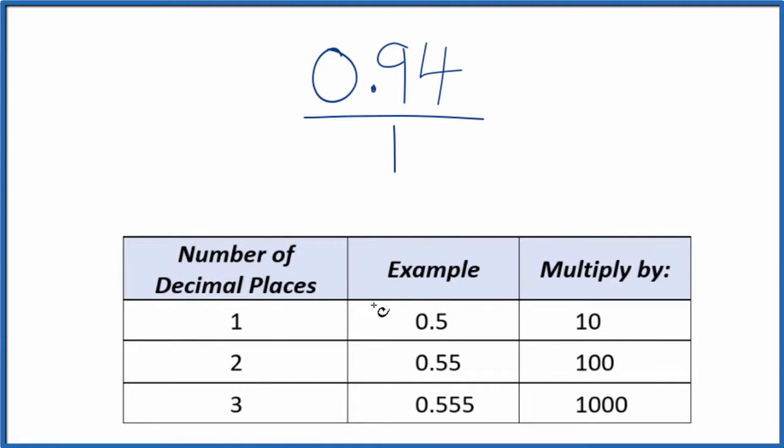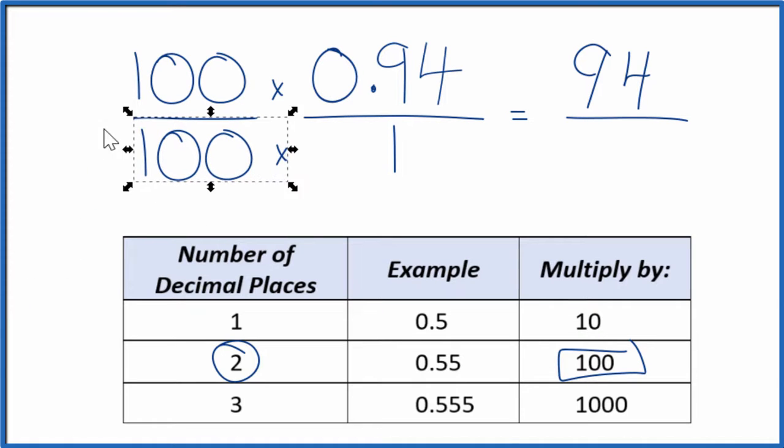I see there are one, two decimal places. We can multiply this by 100 and that'll give us a whole number. So let's multiply 100 times 0.94 that equals 94. So there's our whole number, but we can't just multiply the numerator. We also have to multiply the denominator by 100. That's because 100 over 100, that's just 1, so we're multiplying by 1. We don't change the value, but now we have 100 times 1 is 100.